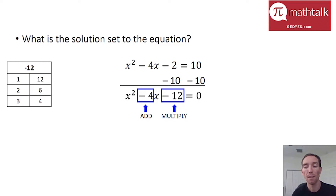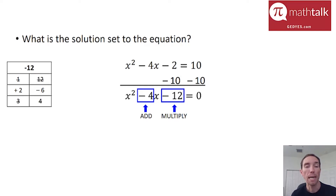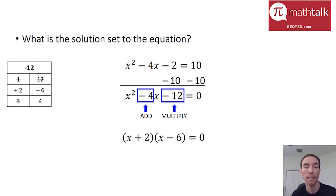So I can use 6 and 2. I need these two numbers to add up to negative 4, which means one of them needs to be negative. Because it's negative 4, the bigger number — 6 — needs to be negative. So I use positive 2 and negative 6, because 2 plus negative 6 is negative 4. Now I can factor my equation into two quantities: x plus 2 and x minus 6.